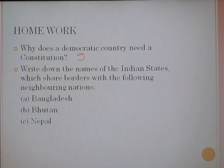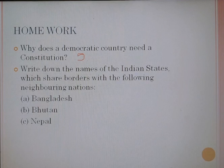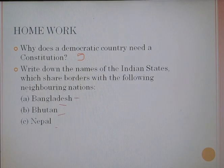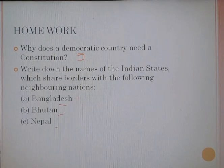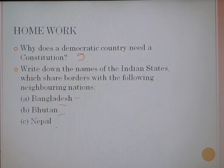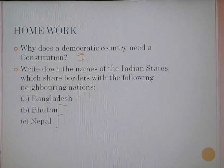The second homework question: write down the names of the Indian states that share a border with the following neighboring countries — Bangladesh, Bhutan, and Nepal. For Bangladesh, you have to write West Bengal, Assam, Meghalaya, and Tripura. For Bhutan, write Sikkim and Assam. For Nepal, write the names of the states that border Nepal. Here we finished Part 1 — thank you everyone.